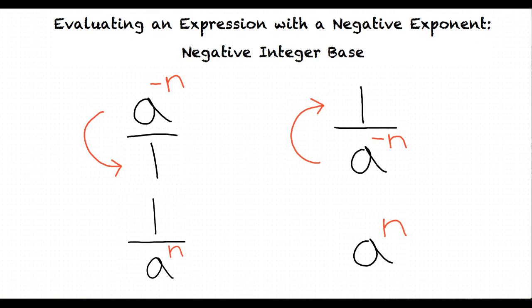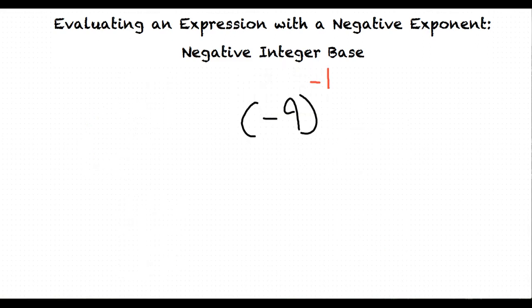Let's work on our first example problem to figure out how this process works. For this specific topic, we'll be using negative numbers as our bases. Our first example problem will be negative 9 to the power of negative 1. In this problem, our exponent is negative 1. To change the exponent to a positive, what step would we have to perform first?